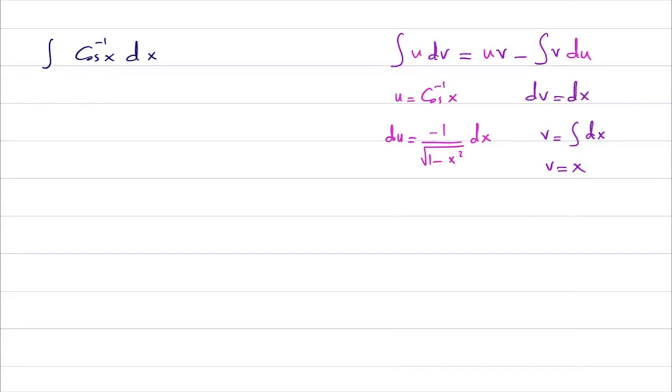So now let us try our best to see if we can simplify this integral. This integral is equal to uv, which is inverse cosine of x times v, which is x itself.